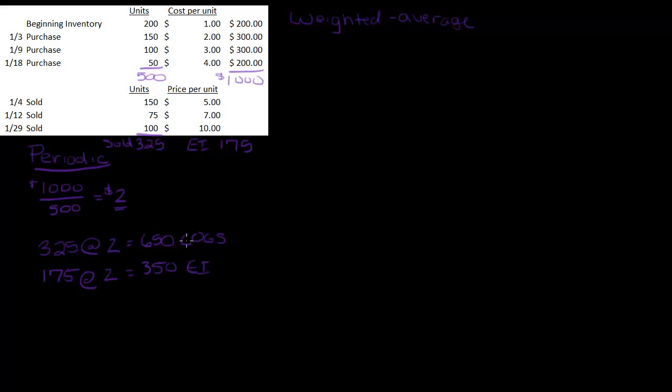And if I add up my cost of goods sold and my ending inventory, I get $1,000 which was my goods available for sale. So I always want to make sure I tie back to that $1,000. Periodic weighted average is really easy, quick and easy.